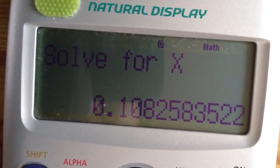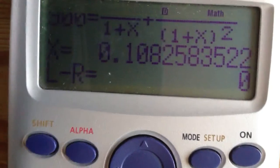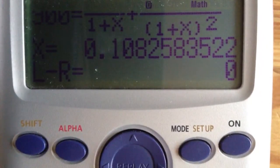And then it will say solve for x. You press the equal sign. Out comes your answer, 0.10825 blah. You're welcome.